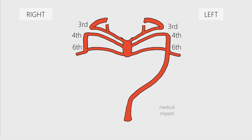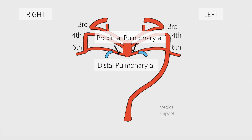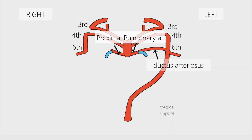The sixth aortic arch is also called the pulmonary arch. The distal portion of the pulmonary arteries arises from buds of the sixth arch, which grow into the developing lungs. The proximal portion of the pulmonary arteries develops from the proximal part of the sixth aortic arch. The distal portion of the sixth arch on the right side disappears, and on the left side it persists to form the ductus arteriosus.